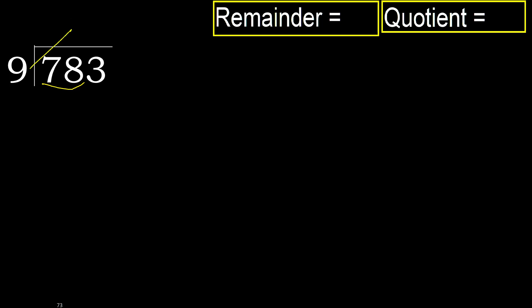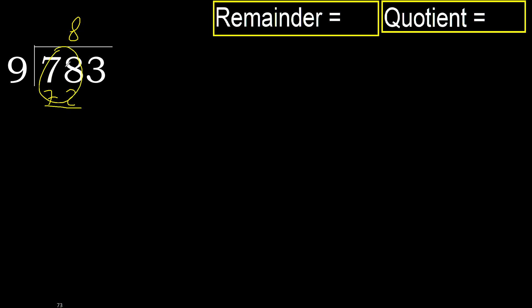9 multiplied by which number is nearest to 78 but not greater? 9 multiplied by 9 is 81, which is greater. 9 multiplied by 8 is 72, which is not greater. Subtract: 78 minus 72 equals 6.